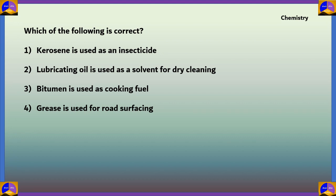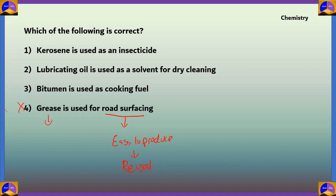Let's evaluate each option. Option 4 says grease is used for road surfacing. For road surfacing, a substance should be easy to produce and can be reused. Grease does not follow these properties, so this is incorrect. Instead, bitumen is easy to produce, can be reused, and is suitable for road surfacing.